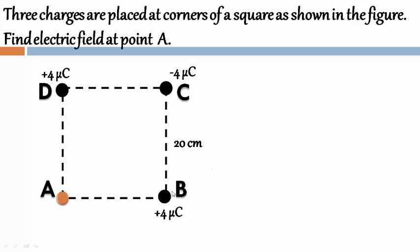Now, charges at B and D are positive therefore electric field due to B and electric field due to D will act like this. Charge at C is negative hence electric field at C will act like this.